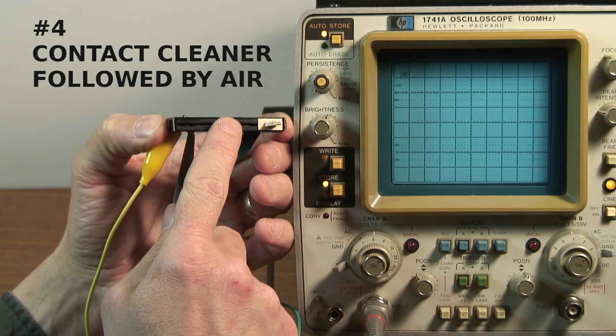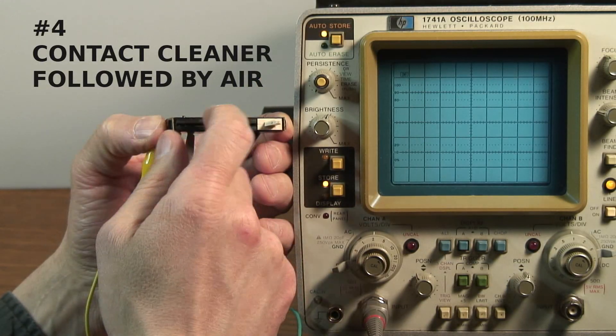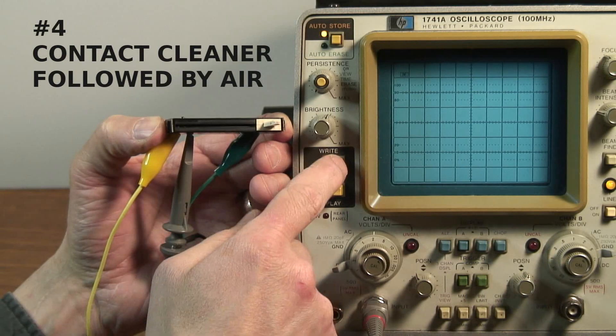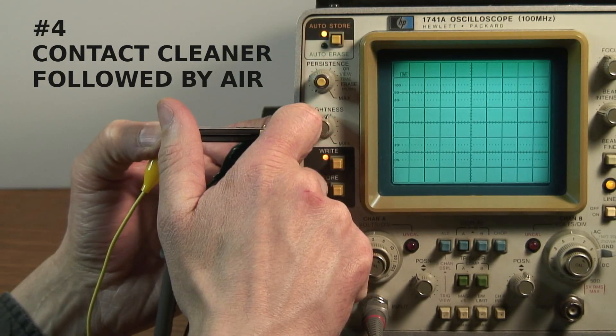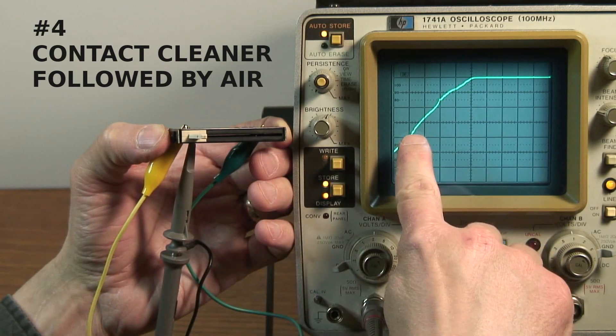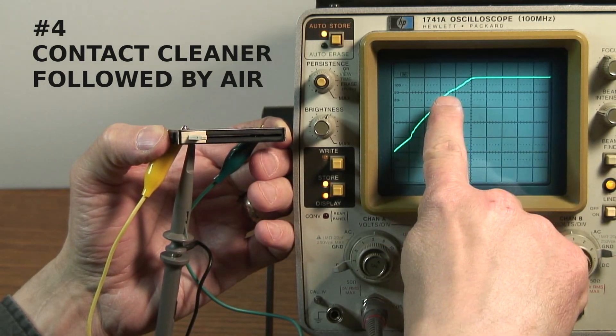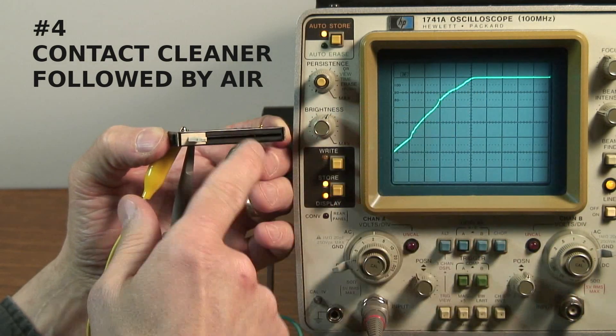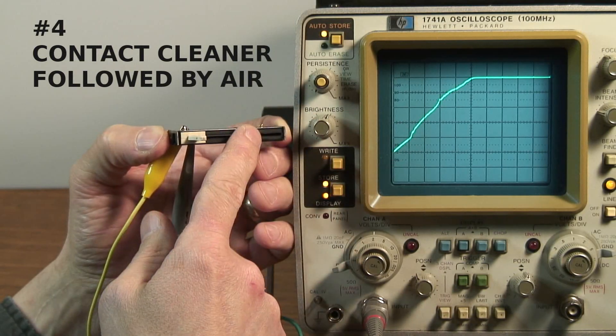This is fader number four. It was the one that was cleaned with contact cleaner and then blown out with the airline. So we'll see what we get. That's pretty good. There's a few little areas where there's a few spikes, but other than that, this is pretty acceptable.